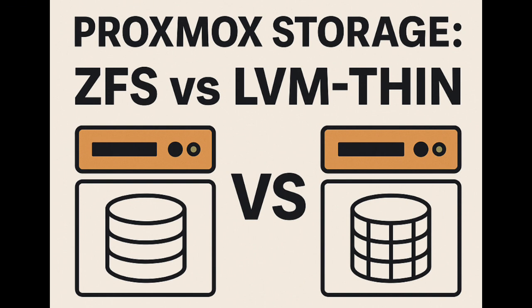As a final thought beyond the specific choice of ZFS versus LVM Thin, what does this whole deep dive tell us about the trade-offs we're always making in technology? We're constantly balancing rich, powerful features against demanding resource requirements, or balancing absolute rock-solid data integrity against simpler ease of use — feature creep versus simplicity, power versus overhead. How do these little micro-decisions, like picking a file system for your home server, reflect bigger principles of system design that apply elsewhere, in your job or other projects? Something interesting to mull over long after you've clicked next on the Proxmox installer.